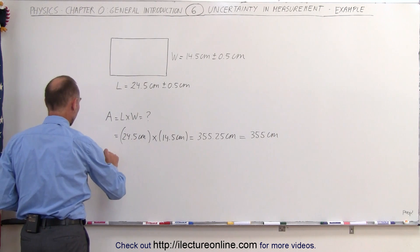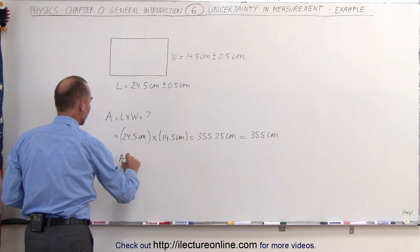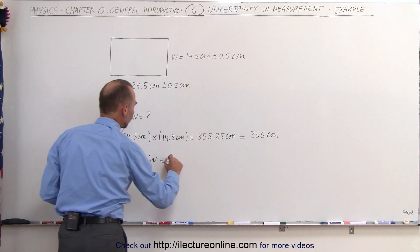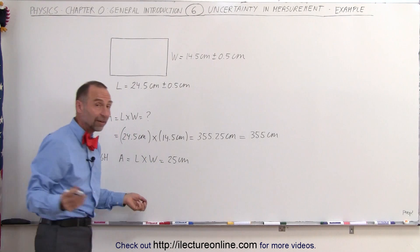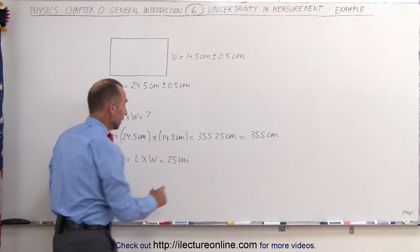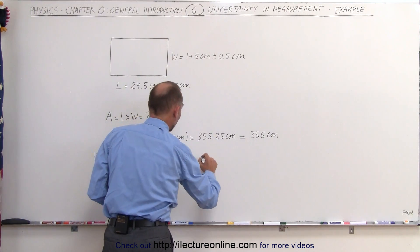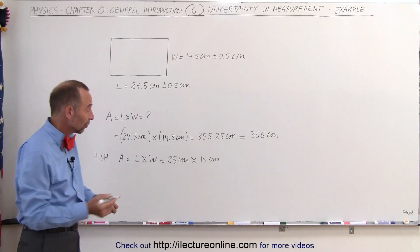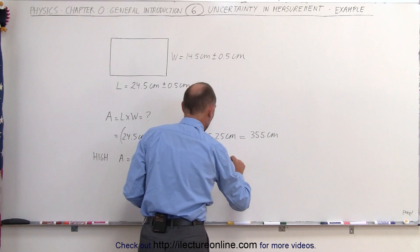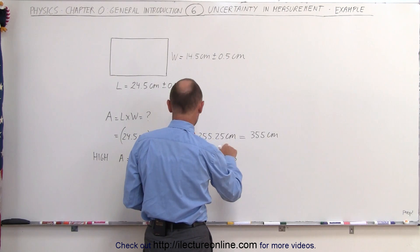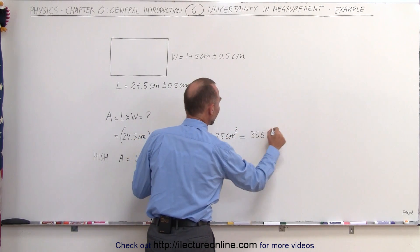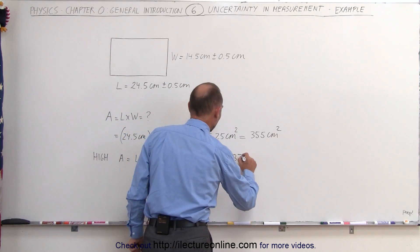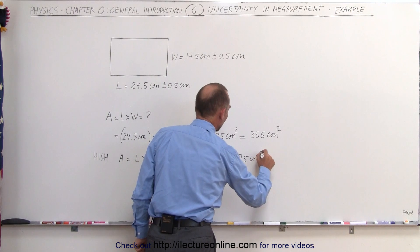On the high side, the area is going to be equal to the length times the width, which is 25 centimeters — because it could be as high as 25 centimeters — times 15 centimeters, because it could be as high as 15 centimeters. When you multiply the two numbers together, and since we're multiplying, the units should of course be square centimeters — that gives 375 square centimeters.